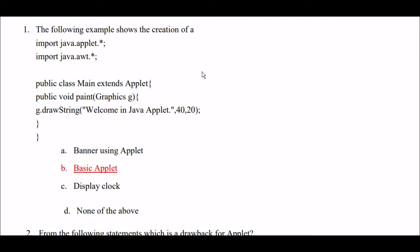Here is your first question. The following example shows the creation of a — an example is given here. Import java.applet and java.awt (AWT stands for Abstract Window Toolkit). Public class main extends applet. A Graphics g function is used, and g.drawString draws the string 'Welcome in Java Applet' at size 40 and 20. So this is a program of applet programming.